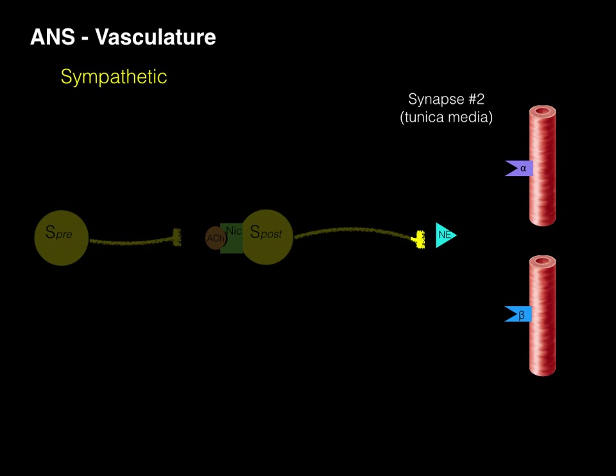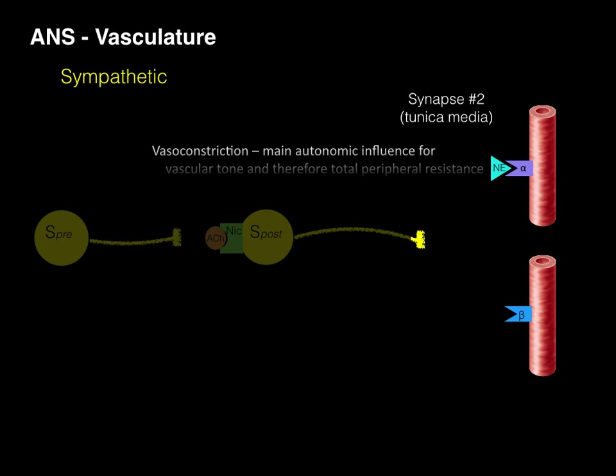In synapse number two, norepinephrine binds to receptors in the tunica media — the smooth muscle of vessels. Norepinephrine will go to two different types of receptors. First, an alpha-adrenergic receptor, which has a vasoconstrictor action. Vasoconstriction occurs because that is the main autonomic influence for vascular tone and therefore total peripheral resistance. This is what happens to the majority of all arteries found throughout the body.